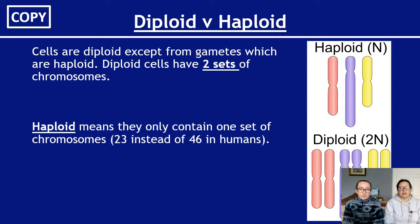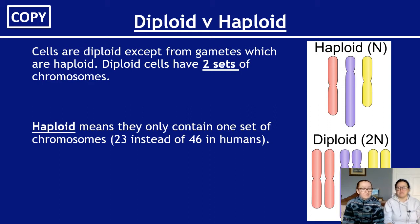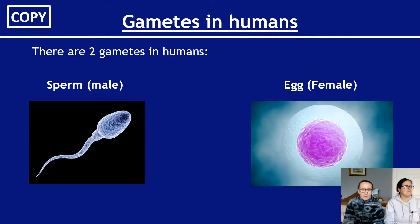All normal body cells are diploid, except gametes — they are haploid. Diploid cells have two sets of chromosomes. Haploid cells contain only half the DNA needed, meaning they contain one set of chromosomes. For example, there are 46 chromosomes in normal human cells — that's the diploid number. Haploid cells would have 23 chromosomes: 46 is two sets, 23 is one set.